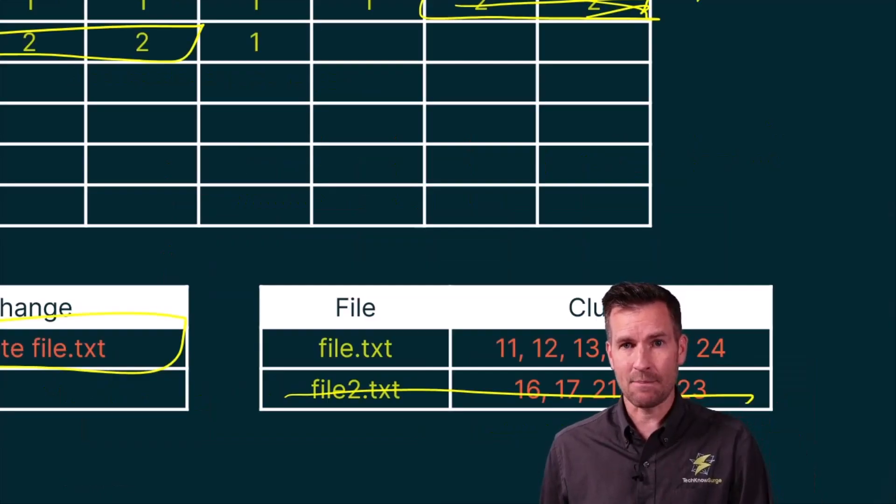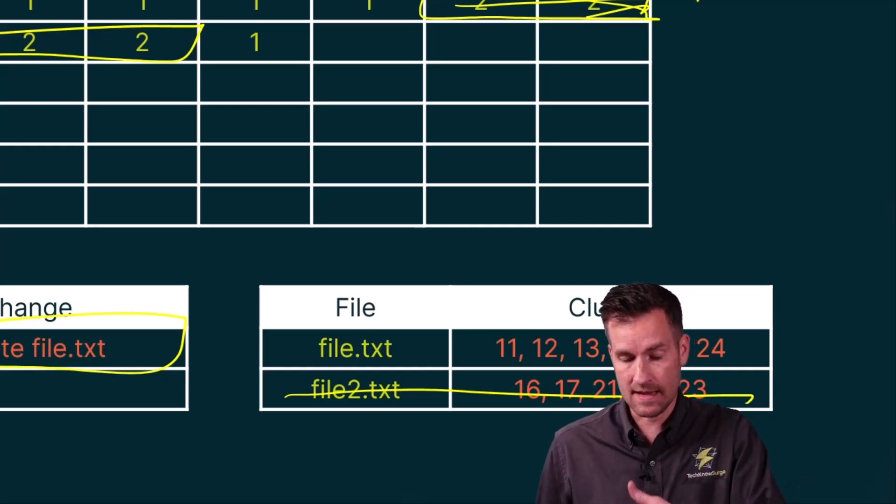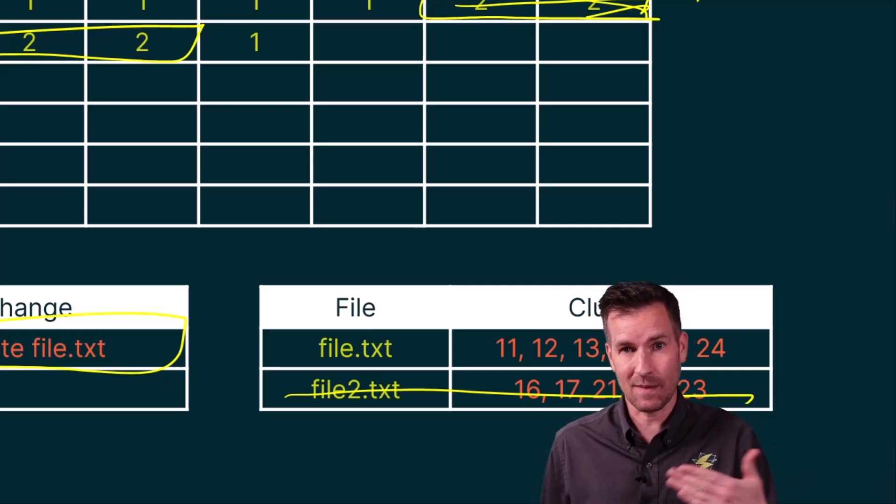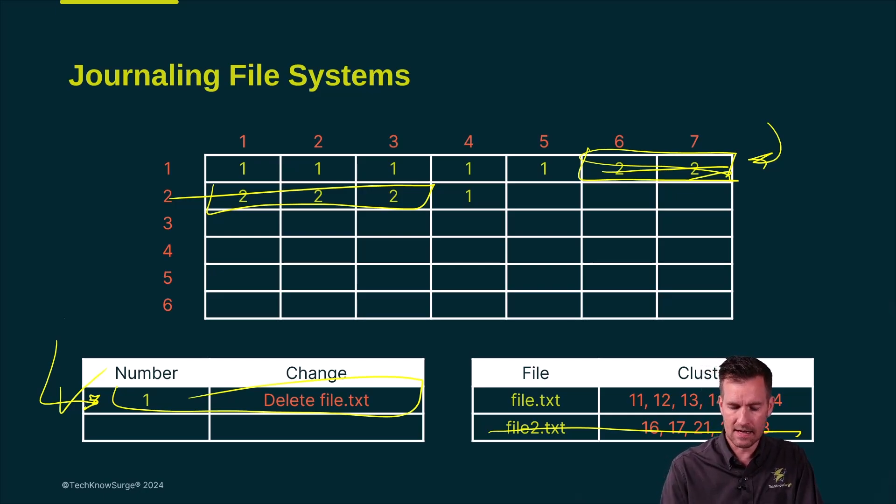Now if something happens along the way and the computer gets distracted, like maybe it gets shut down, it can recover from that because it knows now it can do an assessment to see if it needs to go back and correct anything. Not all file systems do this.